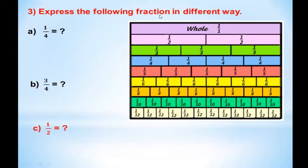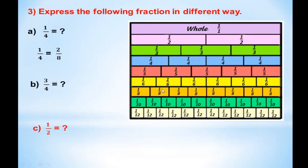Now let's express the following fraction in different equivalent forms. One by four — look at the fraction wall and go along the straight line. It doesn't match with denominator five or six, but it matches at eight: two by eight. And at twelve: three by twelve. So one by four is equal to two by eight and also equal to three by twelve.